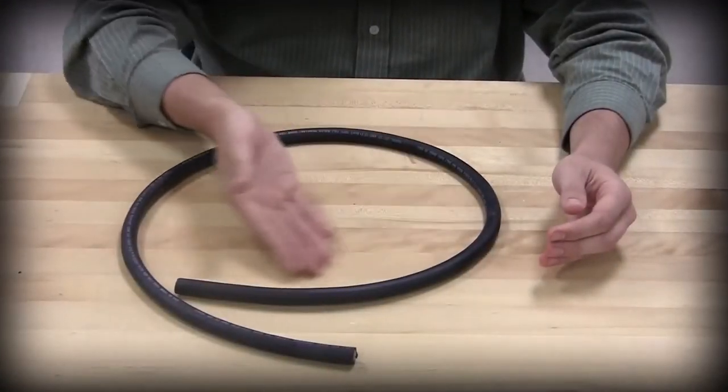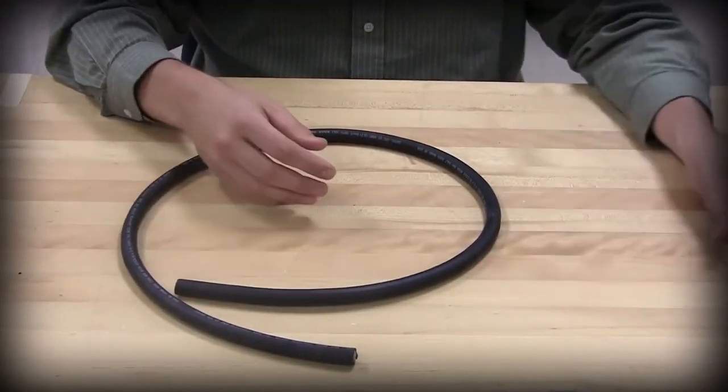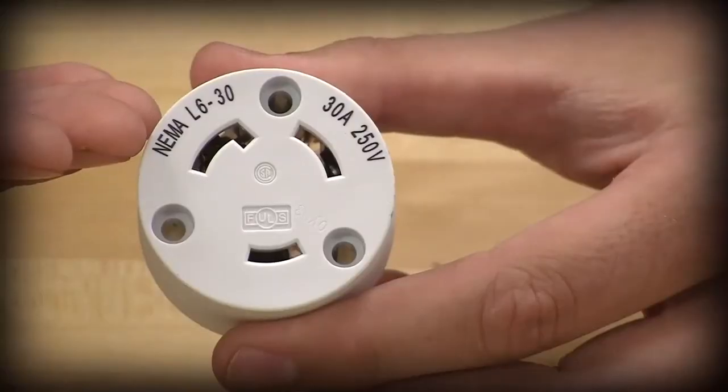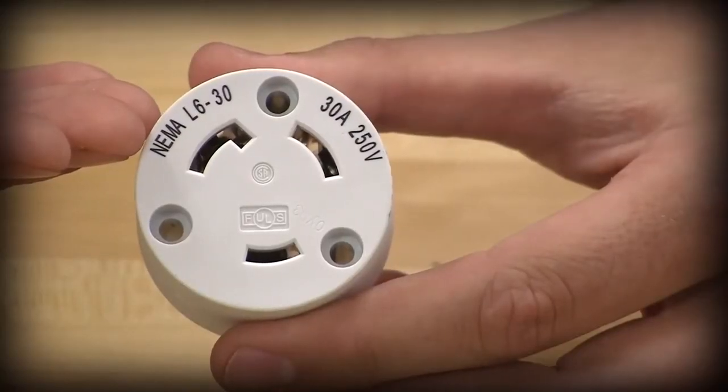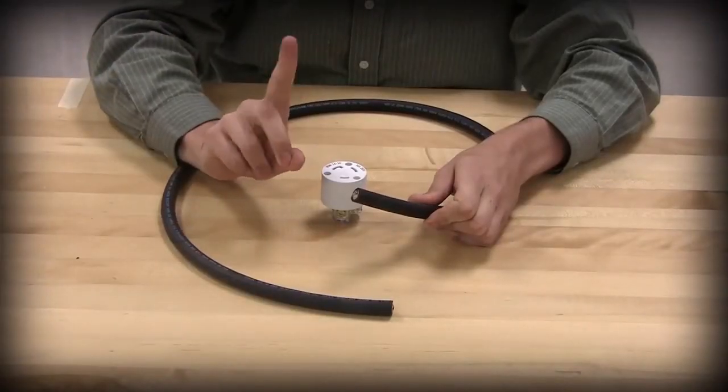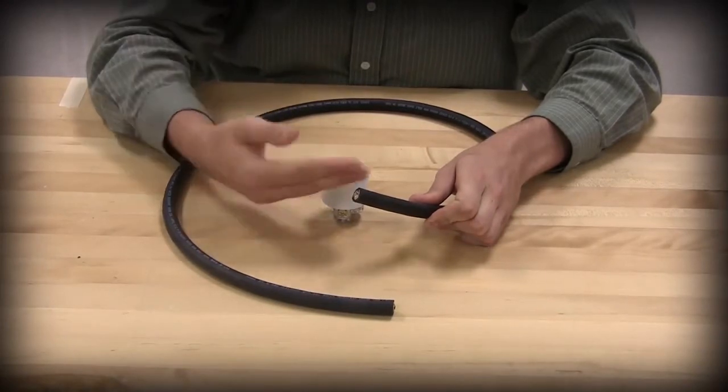For this application we'll be using a 12 gauge wire with a 30 amp 250 volt three wire connector. It is important that you do not pre-strip the cord jacket or conductors before assembly.